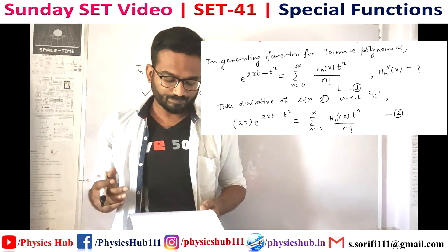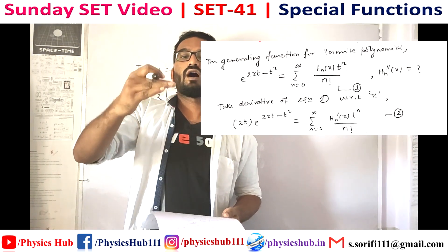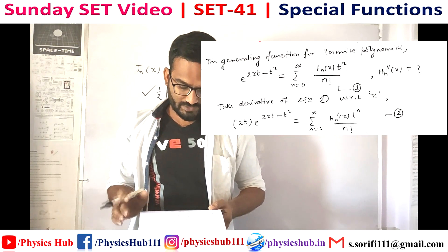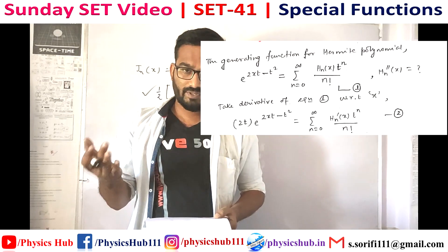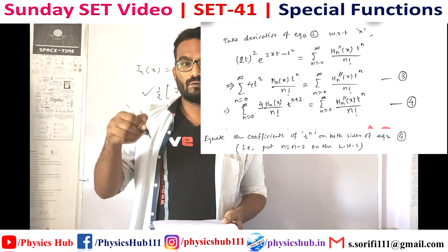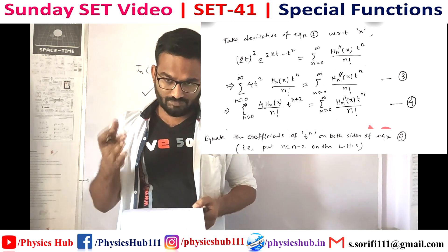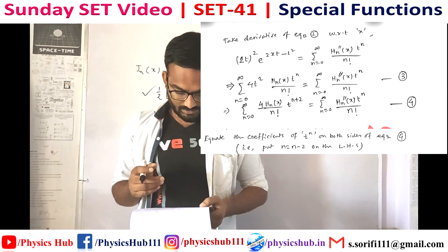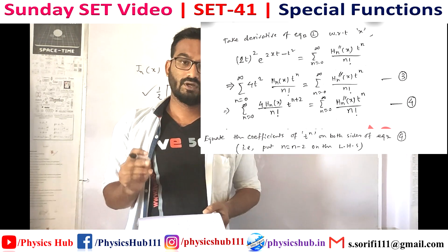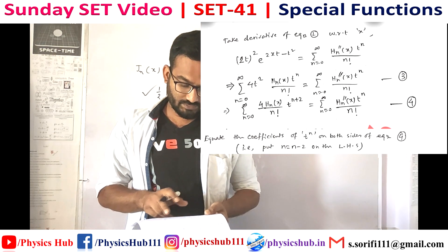We need to find Hn''(x). Taking the derivative on both sides with respect to x gives equation 2. Taking the derivative again with respect to x gives equation 3: 4t² · Hn(x) · t^n / n! equals Hn''(x) · t^n / n!, where the exponent (2xt - t²) is replaced using the parent equation 1, yielding equation 3. We then gather the coefficients of t to get equation 4.